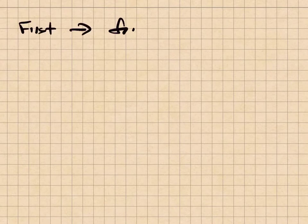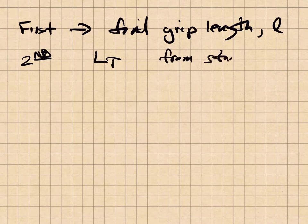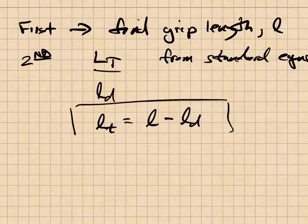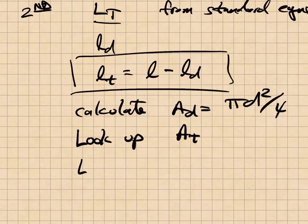To summarize the procedure: first find the grip length l; then find the standard threaded bolt length from standard equations; then find the unthreaded bolt length; then find the threaded length in the grip by subtracting the unthreaded length from the grip length; calculate A_d = π·d²/4; look up A_t; look up the elastic modulus; and plug everything into the bolt stiffness equation.